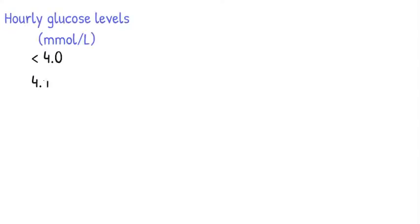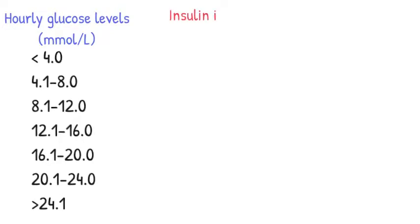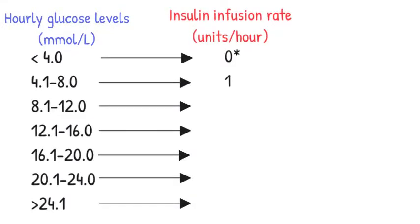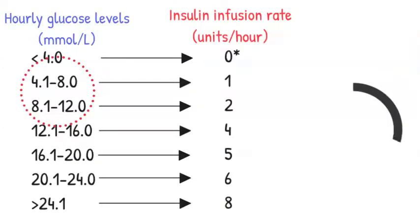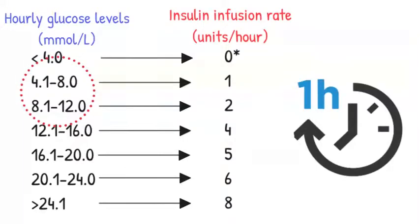The hourly glucose levels can vary while the patient is admitted in hospital, hence the insulin infusion rate needs to be adjusted on an hourly basis. The idea is to keep the glucose within the target range of 4 to 12 by the hourly blood glucose checks.